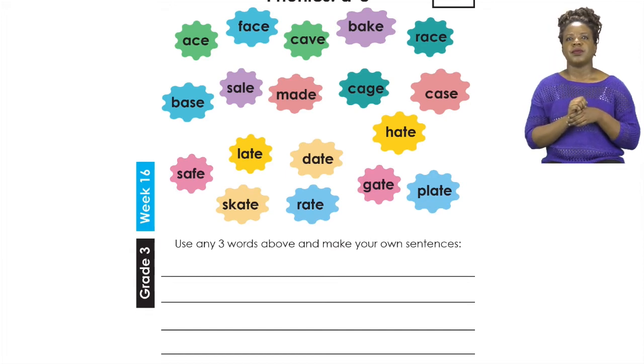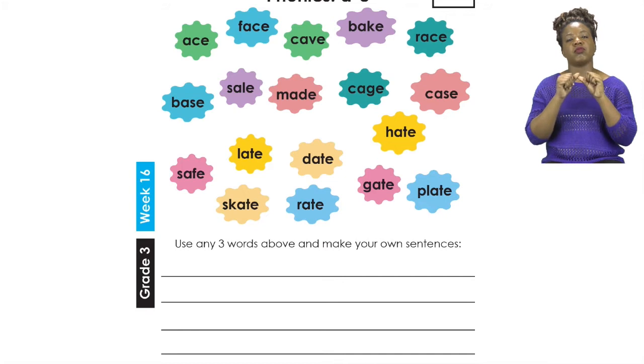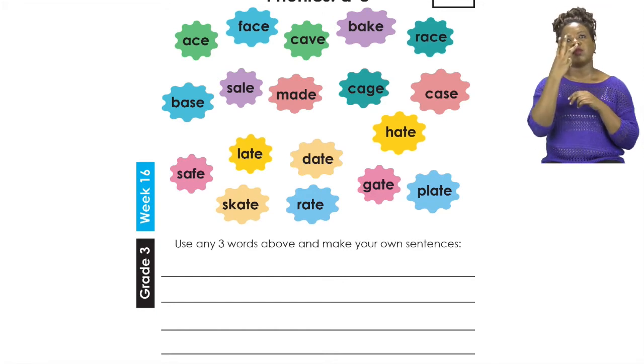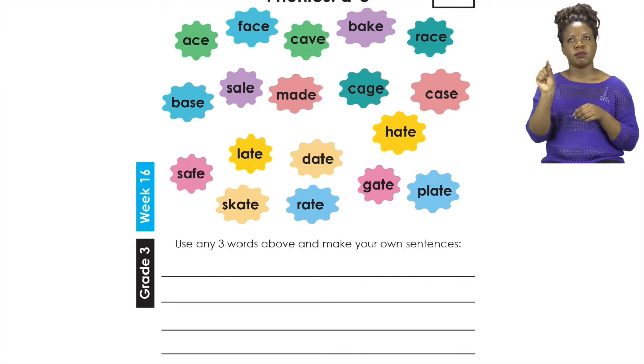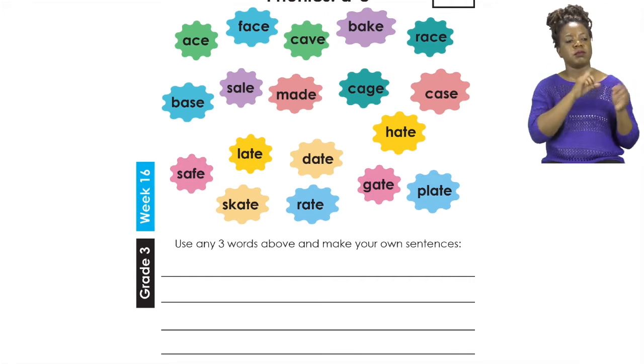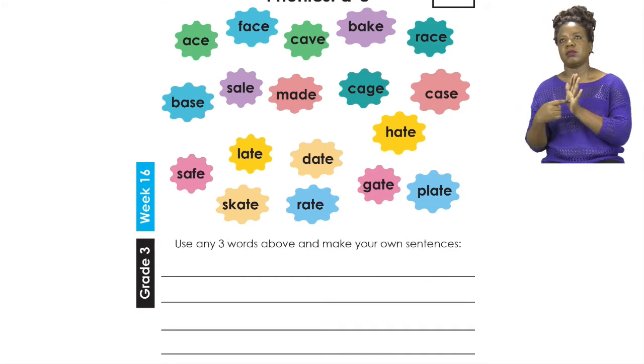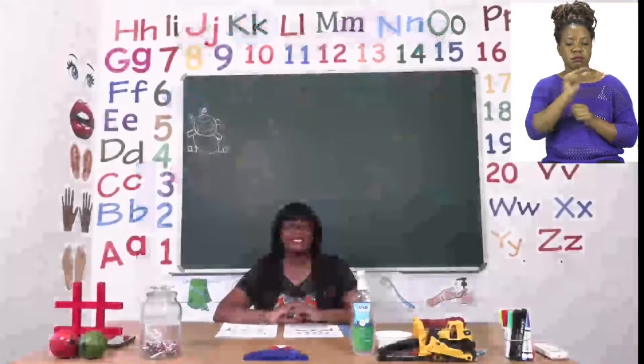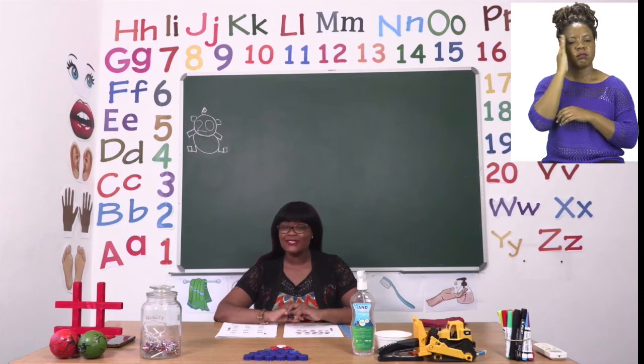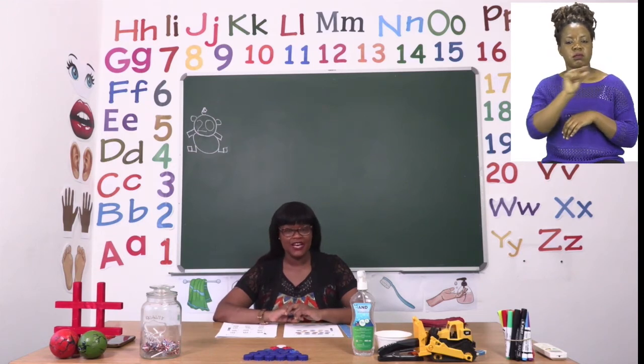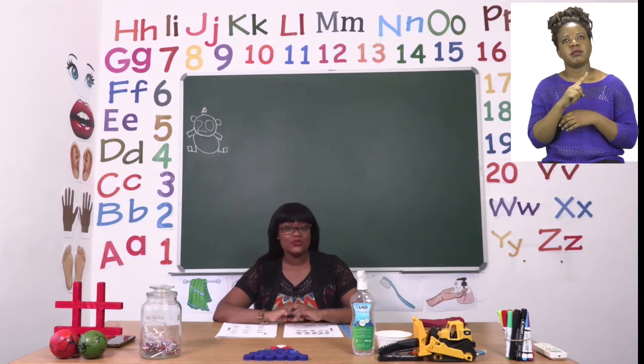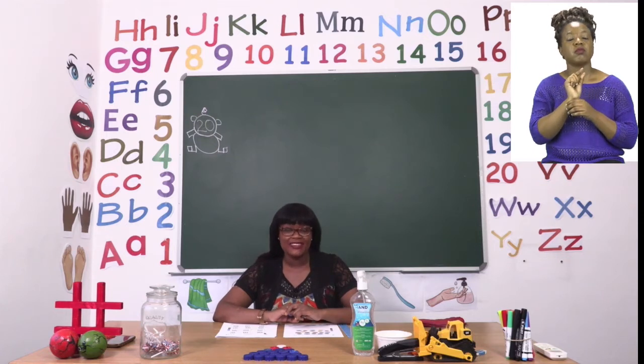So I want you to continue practicing reading those words and now you're going to use three of them to make three different sentences. Take your time and please boys and girls when you're making these sentences start with a capital letter and end with a full stop. Say your sentence out loud before you write it down. That way you'll be able to know whether your sentence makes sense. Spell your words correctly and use words that you already know what they mean.